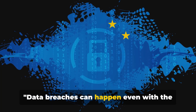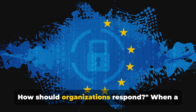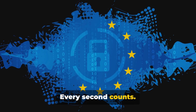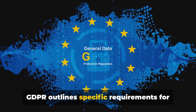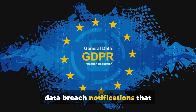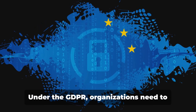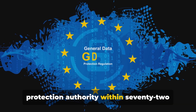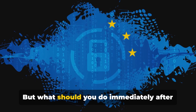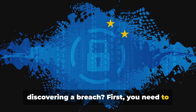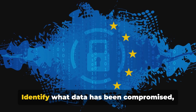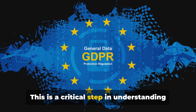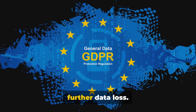Data breaches can happen even with the best security measures. When a data breach occurs, it's like a ticking time bomb — every second counts. GDPR outlines specific requirements for data breach notifications. Under GDPR, organisations need to report a breach to their respective data protection authority within 72 hours of becoming aware of it. First, you need to assess the situation: identify what data has been compromised, how the breach occurred and who might be affected. This is a critical step in understanding how to contain the breach and prevent further data loss.